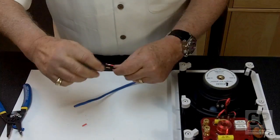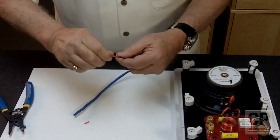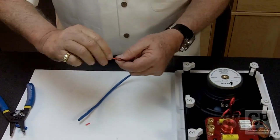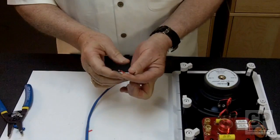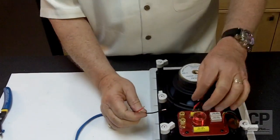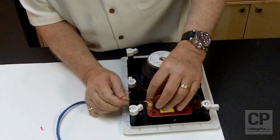Now the thing you want to do is you want to twist those strands tightly together to kind of create a little post if you will and then all you have to do is take the black connector put it into the black slot.